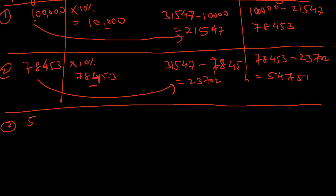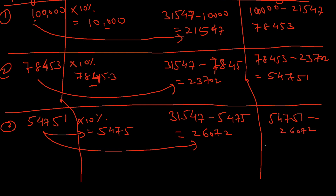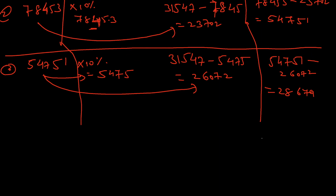For Year 3: opening balance is $54,751. Interest is 10% of $54,751 = $5,475. Payment is $31,547, so principal repaid = $31,547 − $5,475 = $26,072. Closing balance = $54,751 − $26,072 = $28,679.